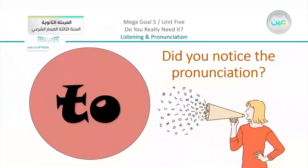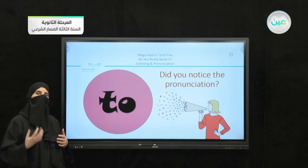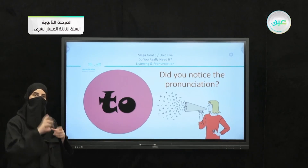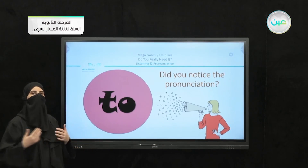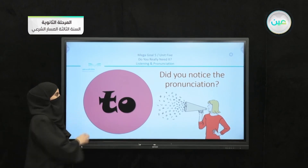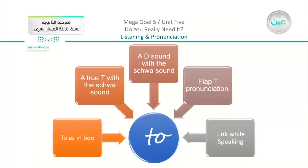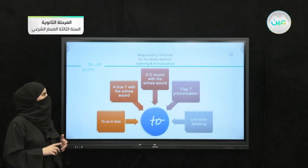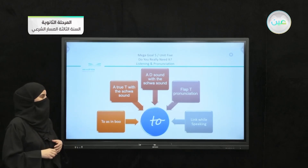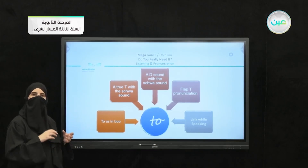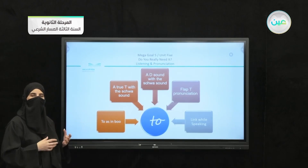After the listening part we had something dealing with pronunciation. We noticed how native speakers speak English, how they link their words together, and how their sentences flow. We concentrated on the word 'to.' There are different ways to pronounce it: the original pronunciation like 'too' — a true T with the schwa sound — it can also come out like a D sound with a schwa, and we have the flap T pronunciation.